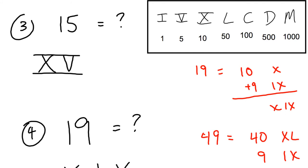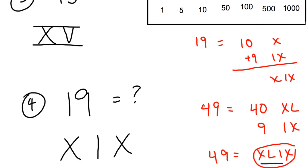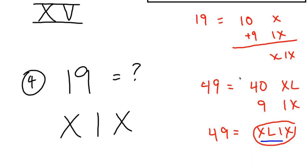My example here, 49. A nice way to get 49 is to do the 40 and then the 9. 40 is XL, 9 is IX, 49 is XLIX all put together.